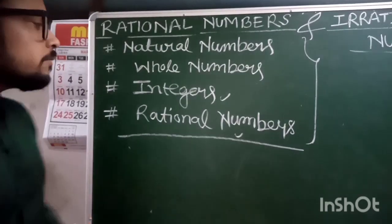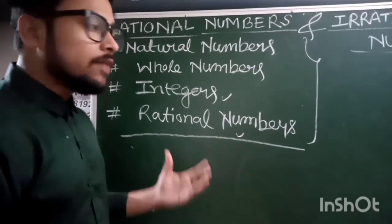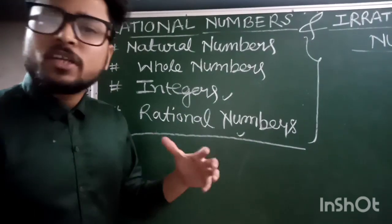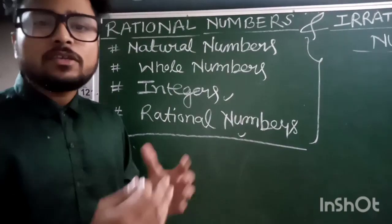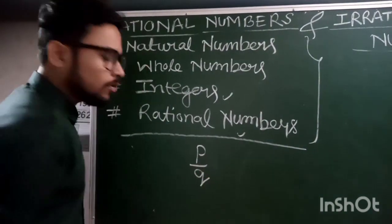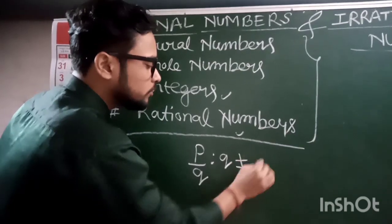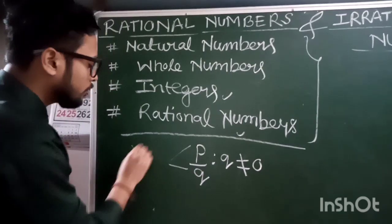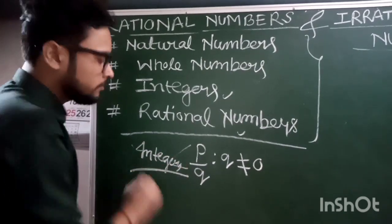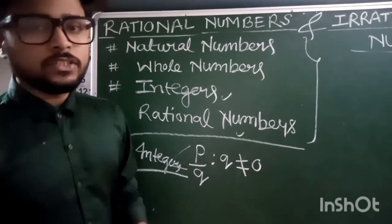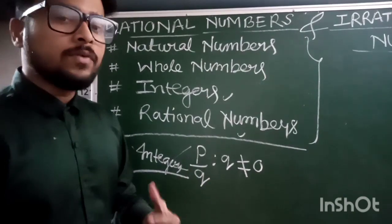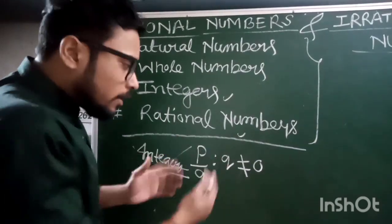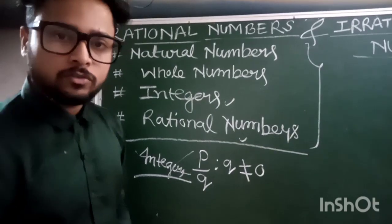Finally, as a definition: a rational number is a type of number that can be represented in the form of p by q, such that q should not be equal to zero, and both p and q should be integers. This is the definition of rational numbers.